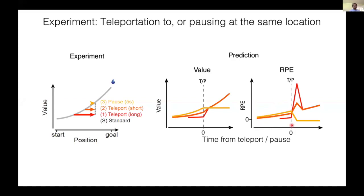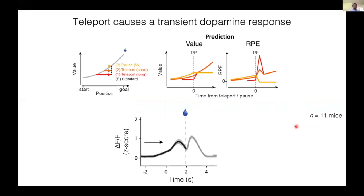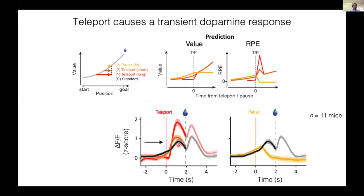Here is the result from 11 mice. This is the average of the standard condition. And here is the response to short teleport and here is the long teleport. The teleport caused transient responses and the peak of the response exceeded the standard condition. And this directly violates the state value hypothesis in which the value should be always maximum just before reward. A pause caused the ramp to disappear and the signal dropped back to the baseline. And these results are consistent with the reward prediction error. Some results strongly violated the state value account.